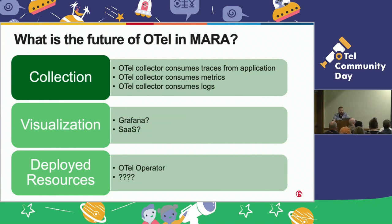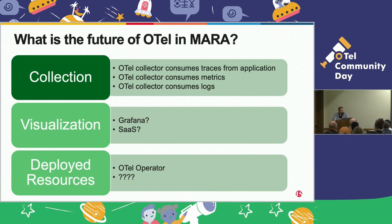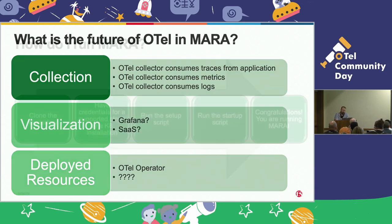Where do we want to be in the future? We want OTEL to take care of metrics, logs, and traces. We want to figure out the best way to do that in a way where people can drop in their own solution — be that LightStep, Jaeger, Zipkin, whatever you want, drop it in there. There are some question marks here because we really don't know what the future holds. We're kind of riding along and seeing what comes out and what works.